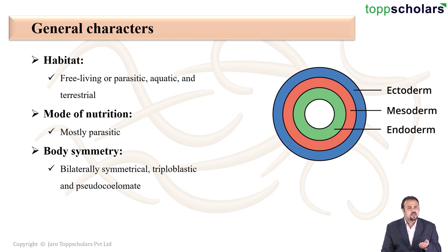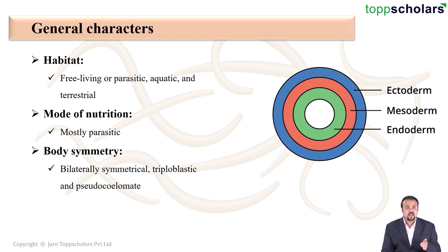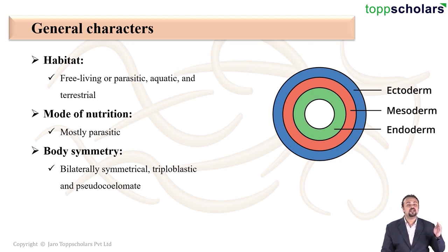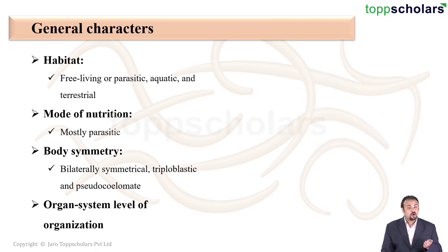These organisms have a coelom, but it is not a true coelom — it is a false coelom. That is why they are called pseudocoelomate organisms. A pseudocoelom is a cavity that is not completely surrounded by the mesoderm.